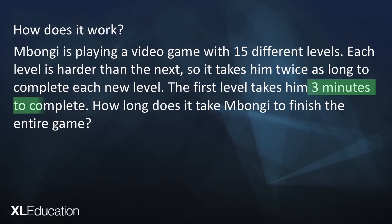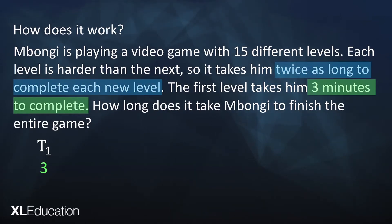We're told it takes him 3 minutes to complete the first level, so that is term 1. That's our a value, which is 3. Each new level takes twice as long to complete, so our common ratio is 2. We're always multiplying by 2 to get the next term. So term 2 is 6 and term 3 is 12.